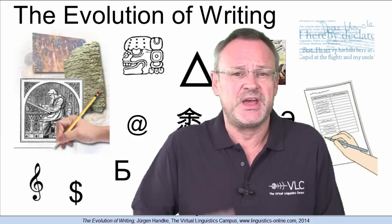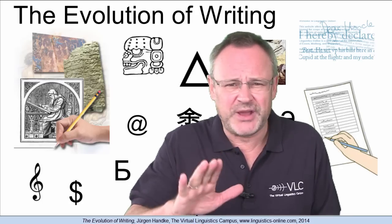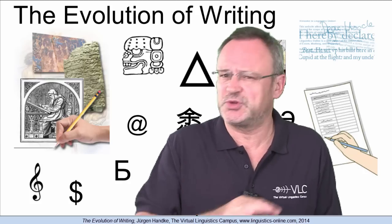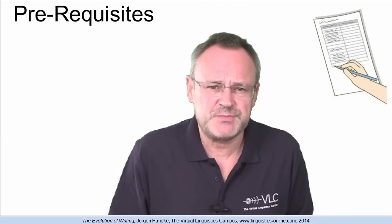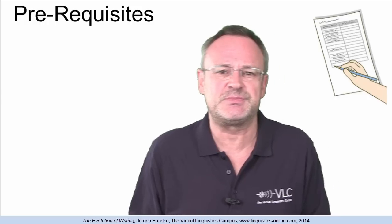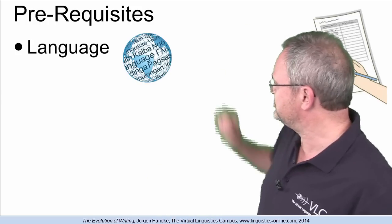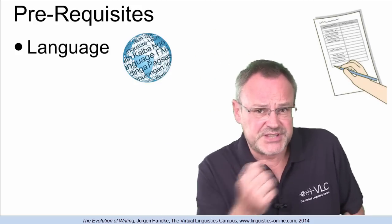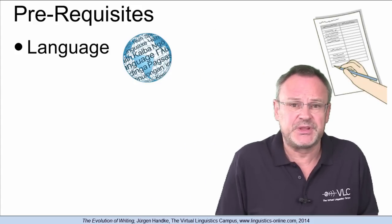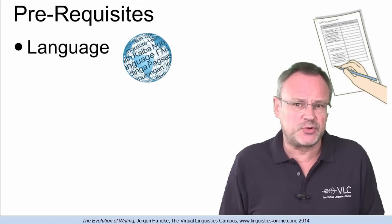Writing is defined as a set of specified visible or tactile signs or symbols representing the utterances of a language. Without writing, our world as we know it today would certainly not exist. Among the most important prerequisites for a set of signs to be classified as a writing system is the existence of a language with a set of rules and conventions, i.e. grammar, shared and understood by a group of people.